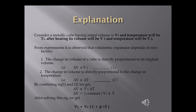The first factor: increase in volume is directly proportional to the original volume V1. The second factor: increase in volume is directly proportional to the change in temperature ΔT. So ΔV ∝ V1·ΔT, where ΔV = V2 − V1. Removing the proportionality sign introduces constant beta, giving: V2 = V1(1 + β·ΔT). Beta is the coefficient of volumetric expansion, defined as increase in volume per unit volume per degree rise in temperature. Its unit is °C⁻¹ or K⁻¹.